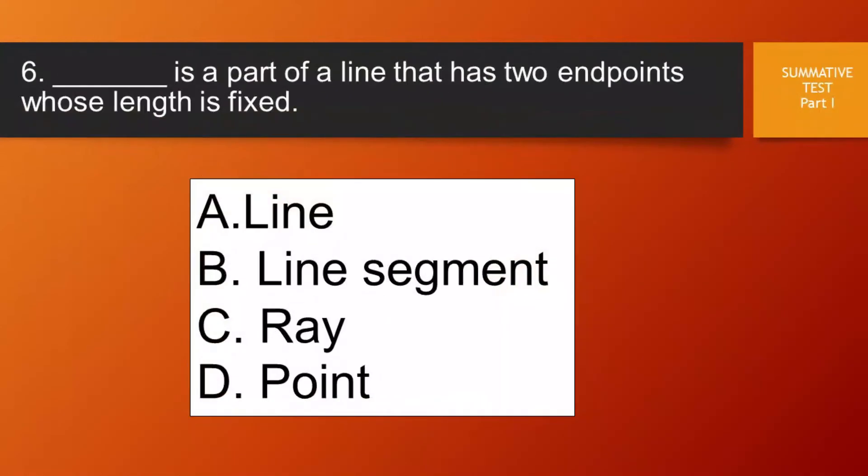Question number 6. Blank is a part of a line that has two endpoints whose length is fixed. Letter A, line. Letter B, line segment. Letter C, ray. Letter D, point.